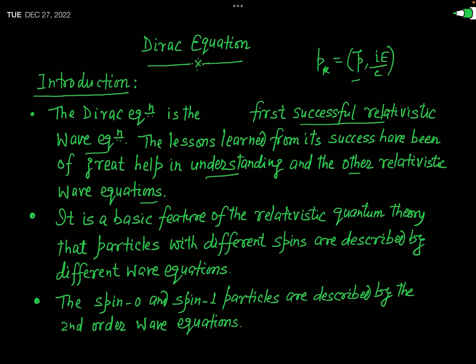Although the Klein-Gordon equation was devised earlier than the Dirac equation, the first successful relativistic equation is treated as the Dirac equation. It is a basic feature of relativistic quantum theory that particles with different spins are described by different wave equations — meaning the appropriate wave equation for a particular particle depends completely on the spin of that particle.